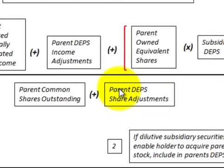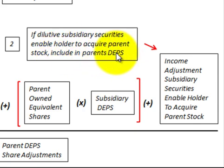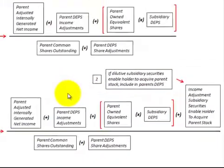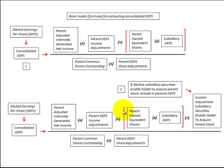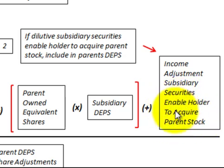There is one other option we have to consider: if we have diluted subsidiary securities that enable the holder to acquire parent stock, those must be included in the parent's diluted earnings per share. We use the same formula as above, with one exception — we would add any income adjustment for subsidiary securities that enable the holder to acquire parent stock. This amount goes in the numerator of our consolidated earnings per share formula.